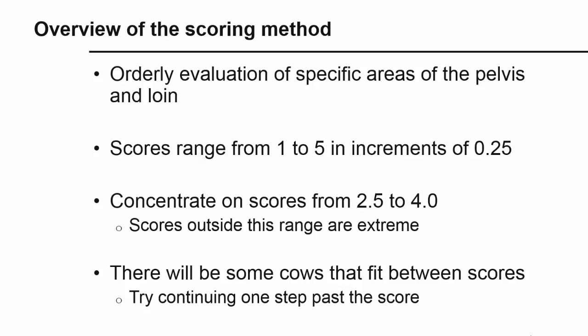This system concentrates on accurately assigning scores from 2.5 to 4.0. Scores outside of this range are extreme and indicate serious problems. For example, the difference between a 4.75 and a 5.0 is insignificant. Both cows are seriously over-conditioned and prone to the same metabolic problems. We would not base management decisions on the differences between these scores. The same is probably true of two cows scoring 1.5 and 1.75. Both are seriously under-conditioned.